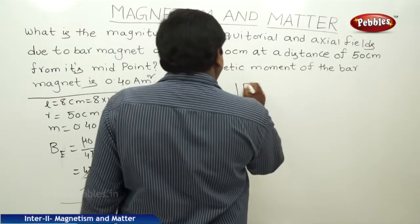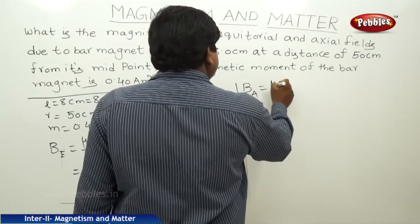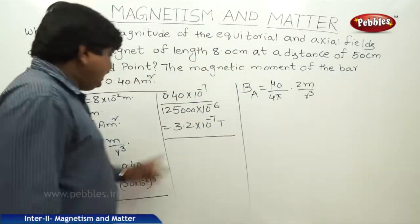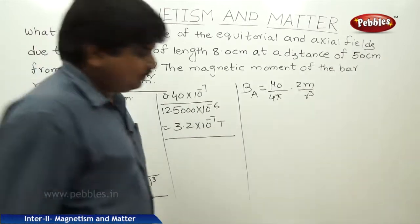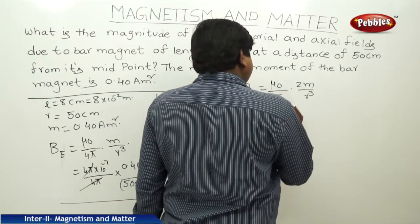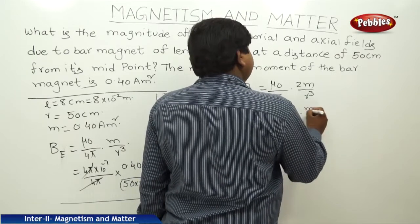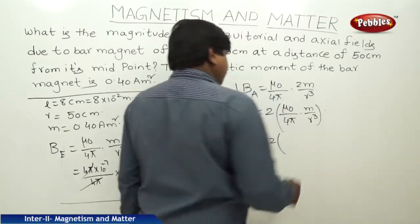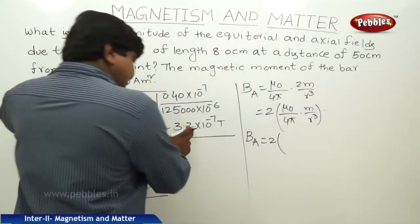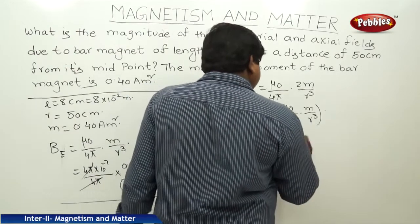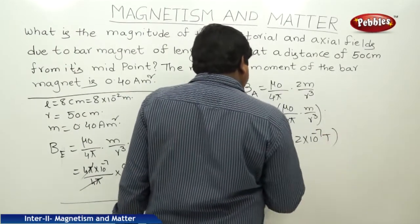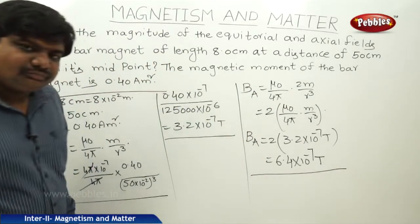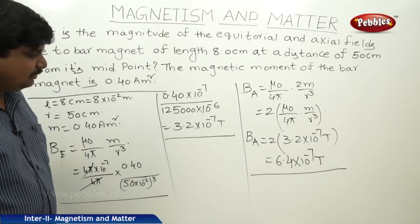The magnetic field at the axial point is mu naught by 4 pi into 2M by R cube, which means it is twice the magnetic field at the equatorial point. Therefore, B_A is 2 into 3.2 into 10 to the power of minus 7 tesla, which gives 6.4 into 10 to the power of minus 7 tesla. These are the values of the magnetic field equatorially and axially.